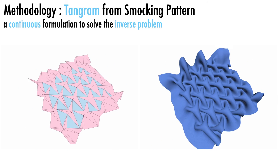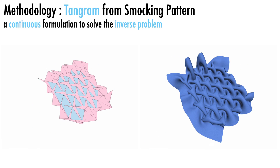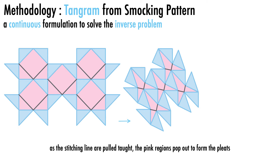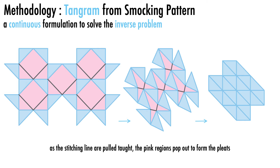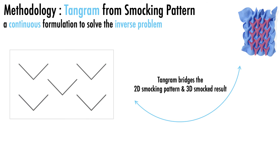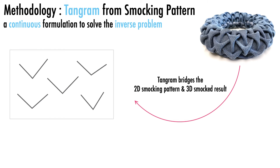The tangram provides an intuitive explanation of how the pleats are formed during smocking. As the stitching lines are pulled taut, they drag the blue underlay faces and cause them to rotate and squeeze the pink pleat regions. As a result, the pink regions pop out of the plane to form pleats. Tangram establishes a connection between the 2D pattern and the 3D smocked result, making it capable of solving the inverse problem.